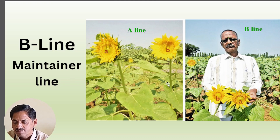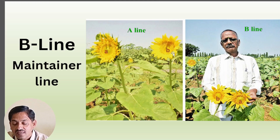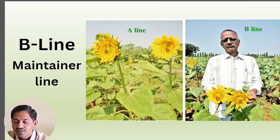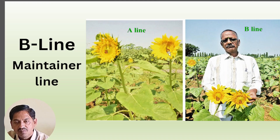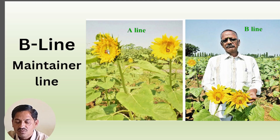B line is a maintainer line. You can see two pictures here — A line and B line. As I said, A and B are both genotypically the same and isogenic. But B and A have one gene difference: B line has one gene difference responsible for fertility, that is pollen fertility. That pollen fertility is required to set seed of the A line.